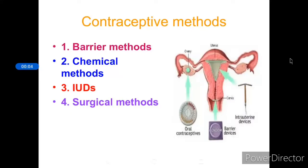In the last videos we discussed in detail about the male reproductive system, female reproductive system, fertilization — that is fusion of male and female gametes — and the development of the embryo. Today we are going to discuss certain methods to avoid pregnancy. The sexual act always has the potential to lead to pregnancy, so if the woman is not ready for it her health will be adversely affected. Therefore, many ways have been devised to avoid pregnancy, including barrier methods, chemical methods, IUDs, and surgical methods.